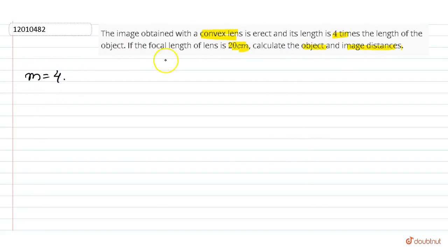Magnification is 4. Convex lens, the focal length is given. We have to find object and image distance. What do we do? We use the lens formula. The lens formula is 1 upon f is equal to 1 upon v minus 1 upon u.